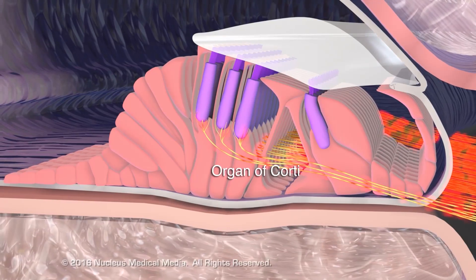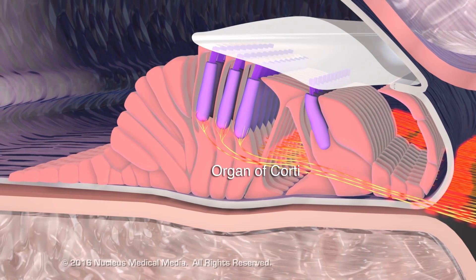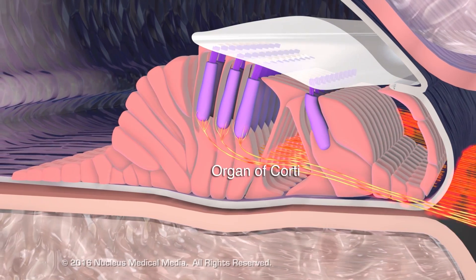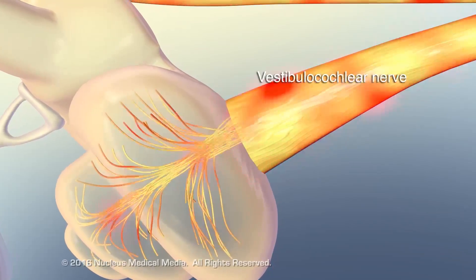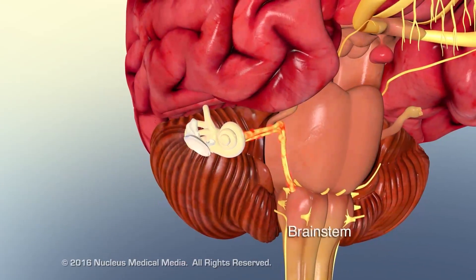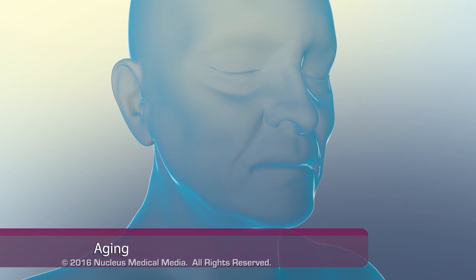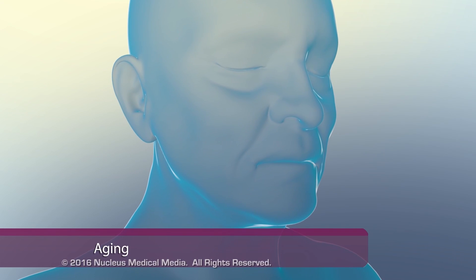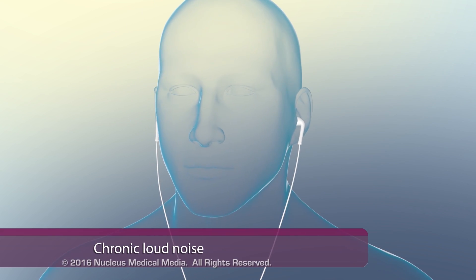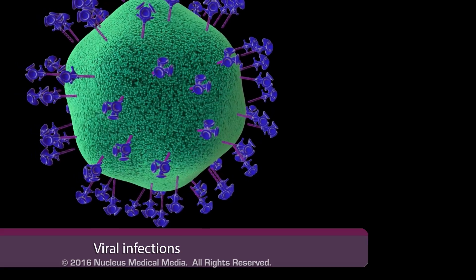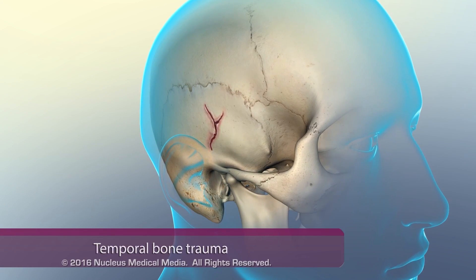Sensorineural hearing loss is caused by disease or damage to the nervous pathway, from the organ of Corti to the vestibulocochlear nerve and central auditory system in the brain stem. Damage to the auditory nerve pathway can result from aging, chronic loud noise, viral infections, or physical trauma to the temporal bone.